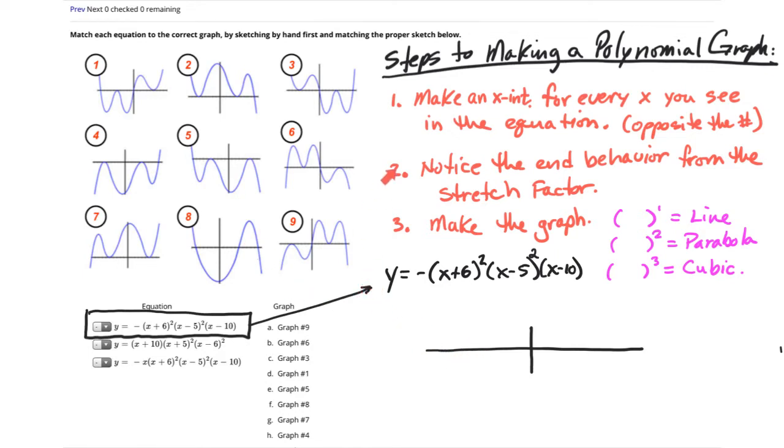When you make the graph by hand, you want to first make an x-intercept for every x that you see in the equation. Notice that whatever number is in the parentheses with the x, we're going to do the opposite of that number. So let's do that right now.